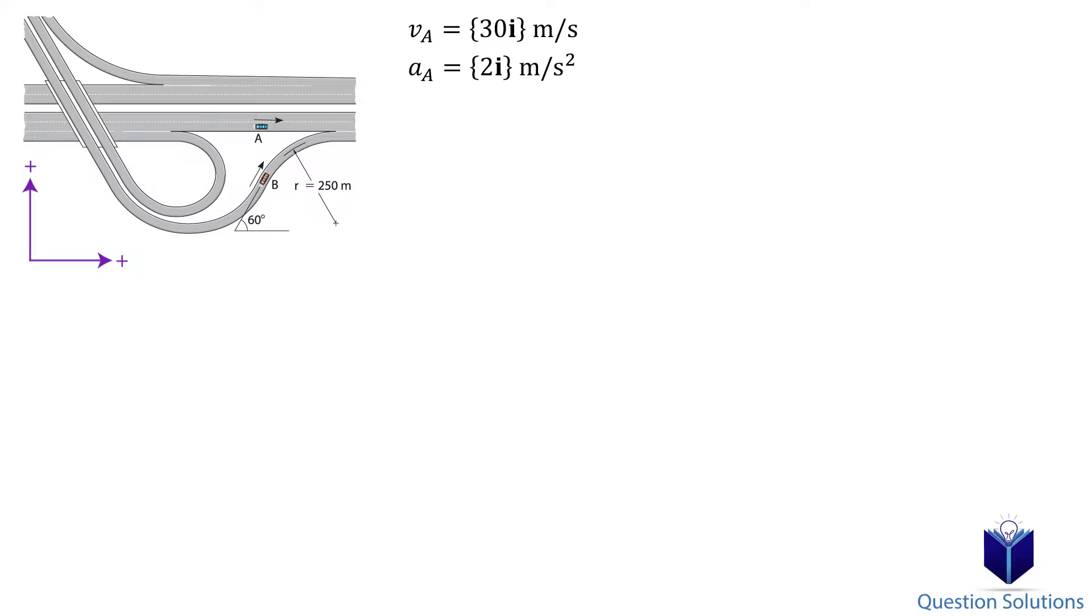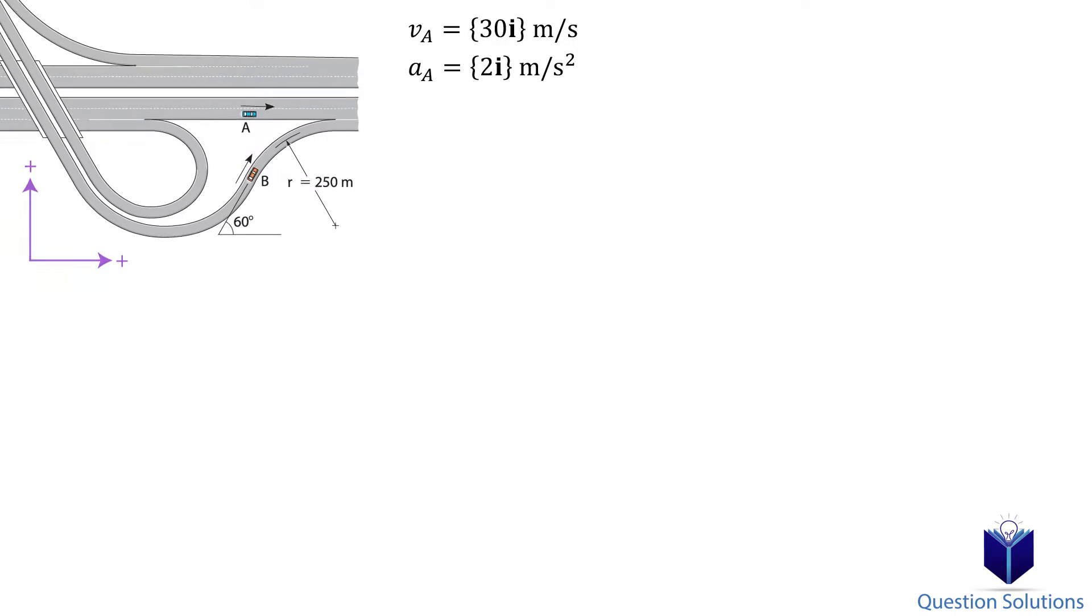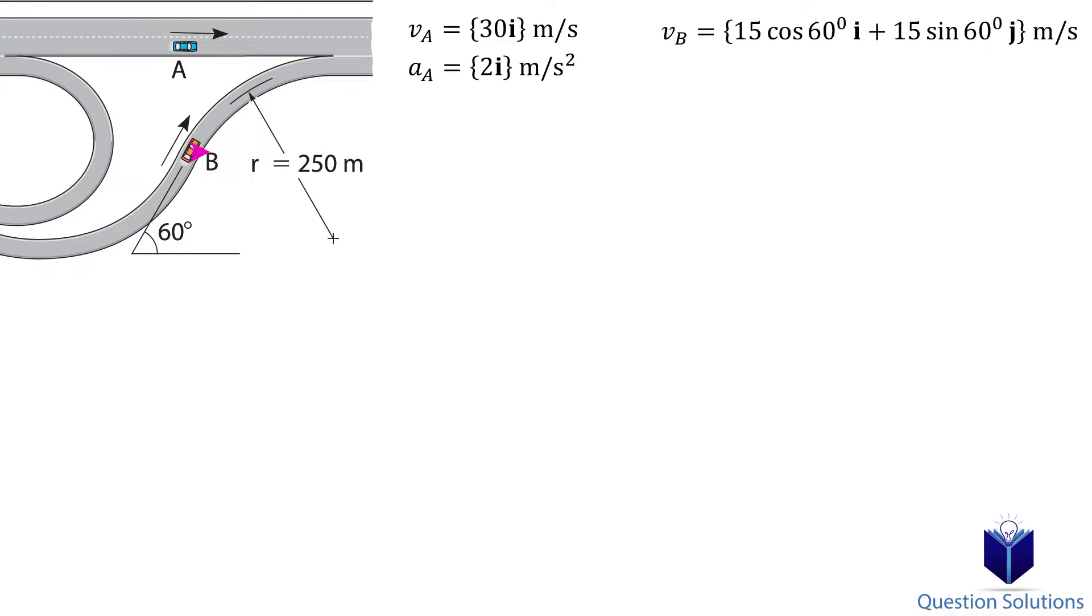For car B we also need to write the velocity and acceleration. Let's focus on velocity first. We have two components which are 15 cos 60 degrees and 15 sin 60 degrees. Let's simplify these.